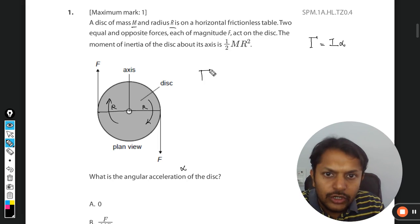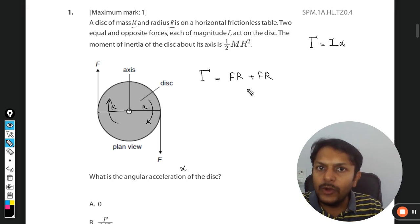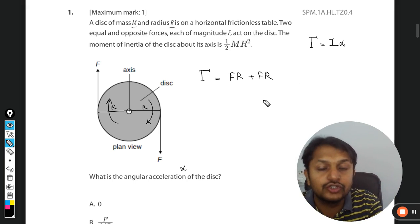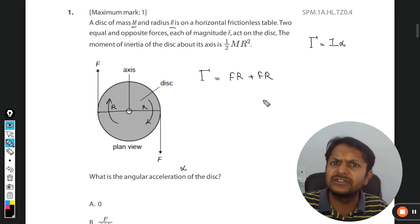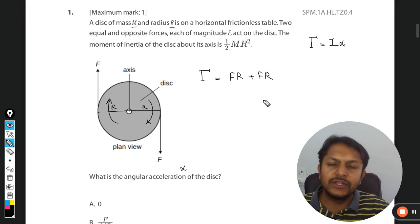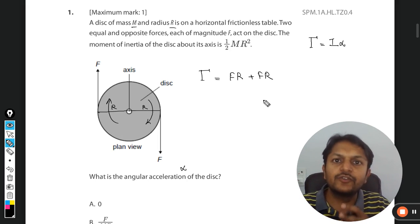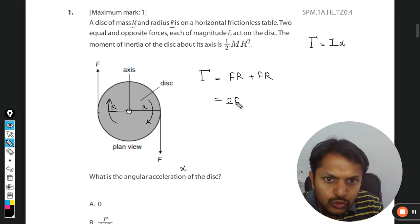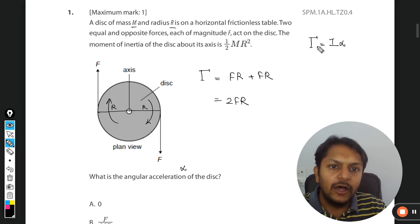The net torque can be taken to be F×R plus F×R. This is clockwise, so usually it is taken as negative, but as far as magnitude is concerned, it's not mandatory that you take the negative sign. This comes out to be 2FR—this is the total torque.